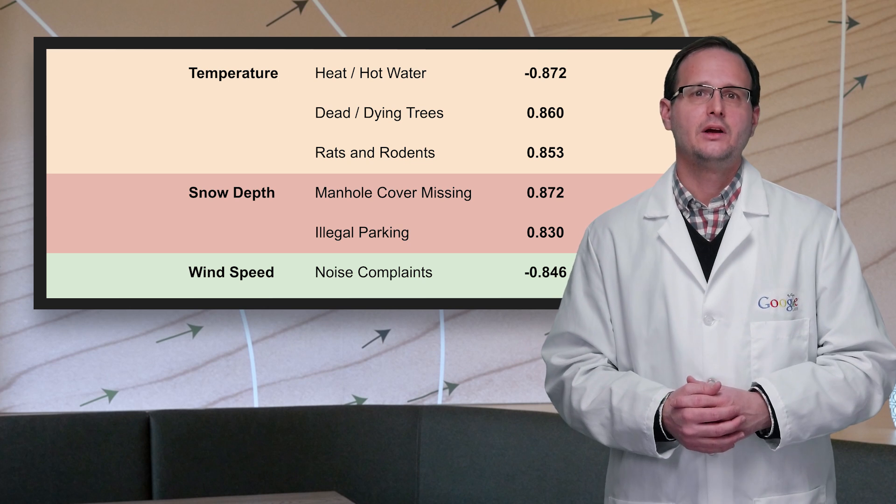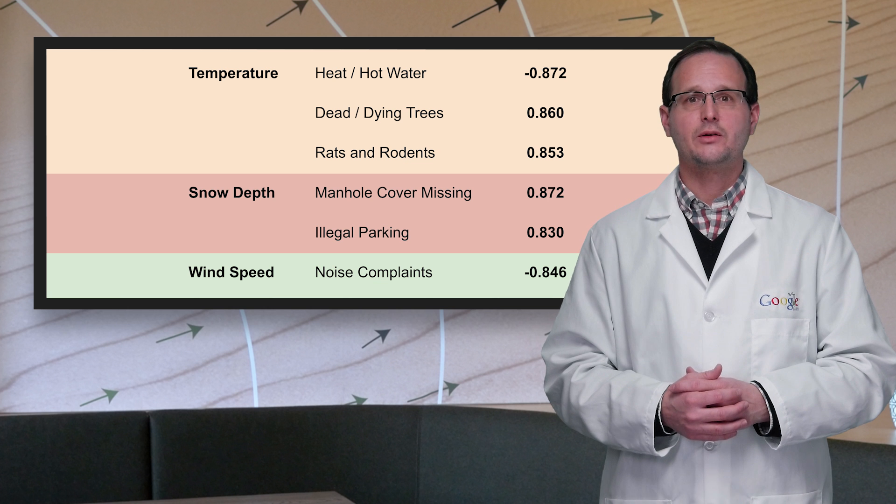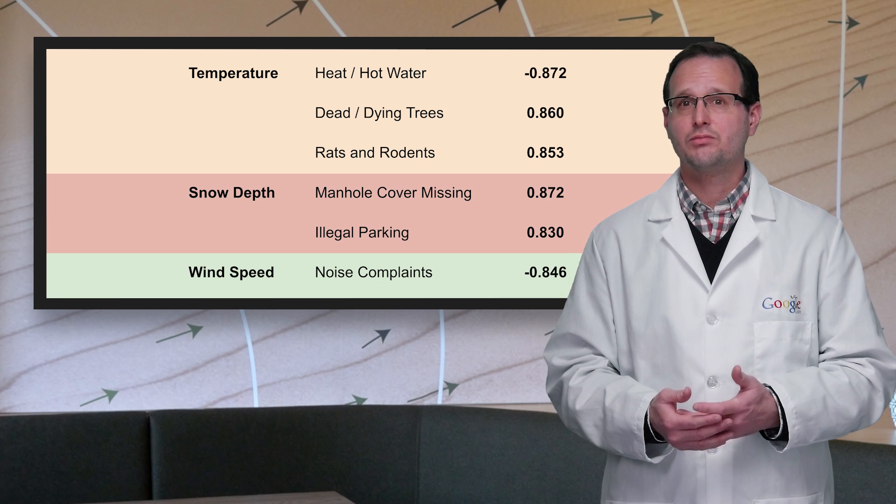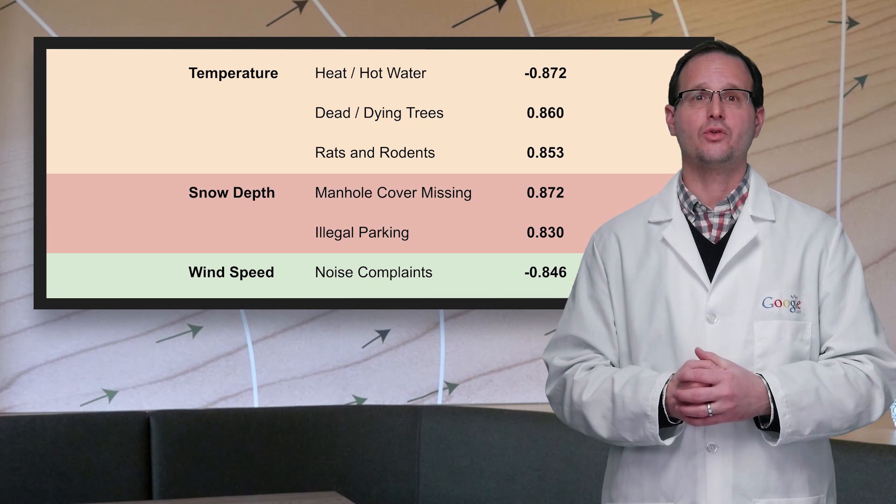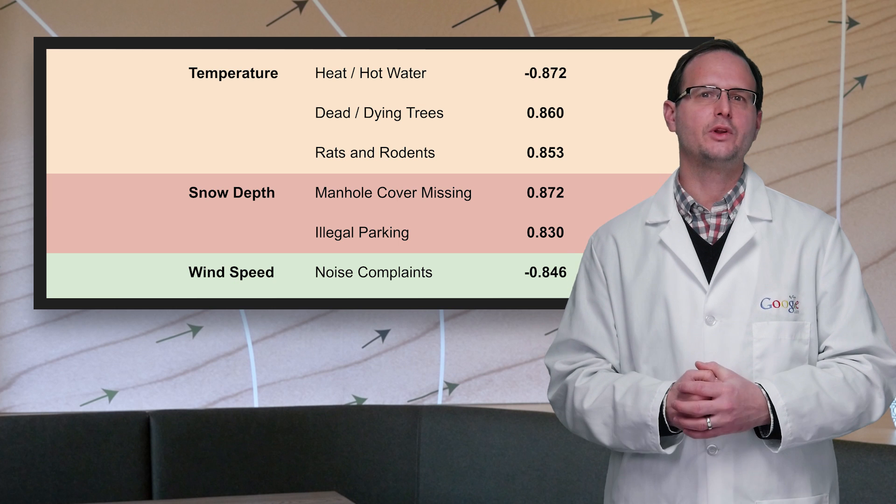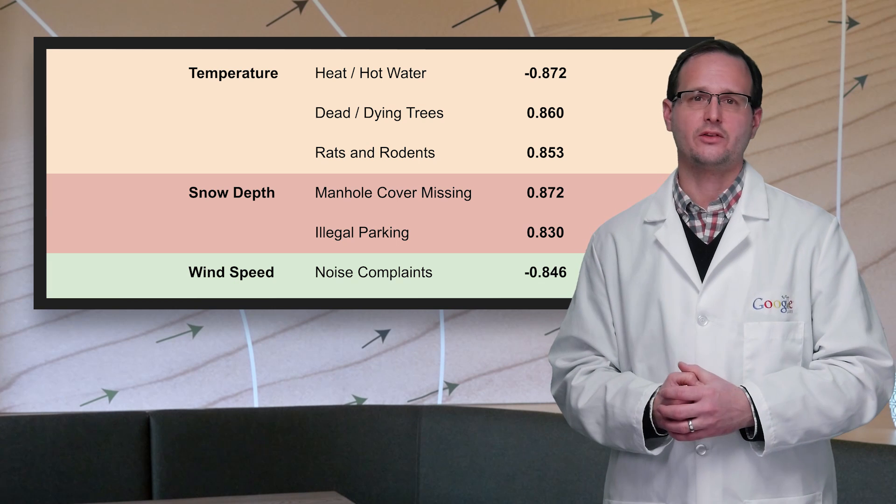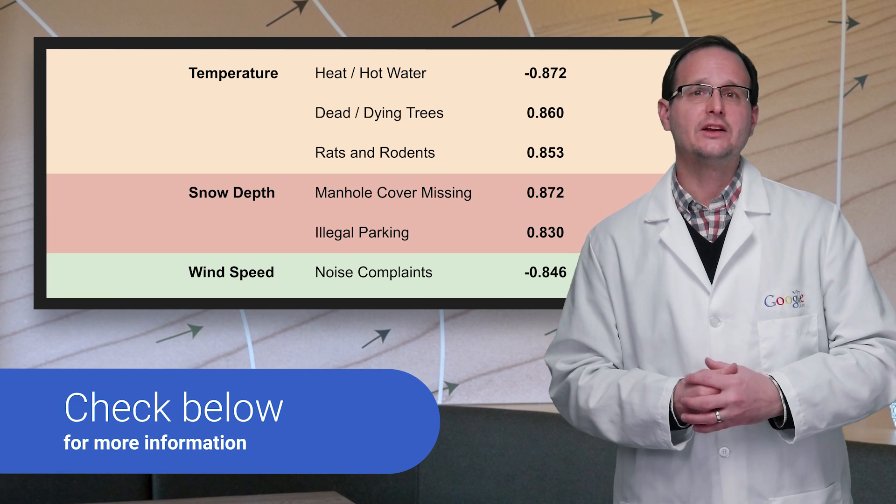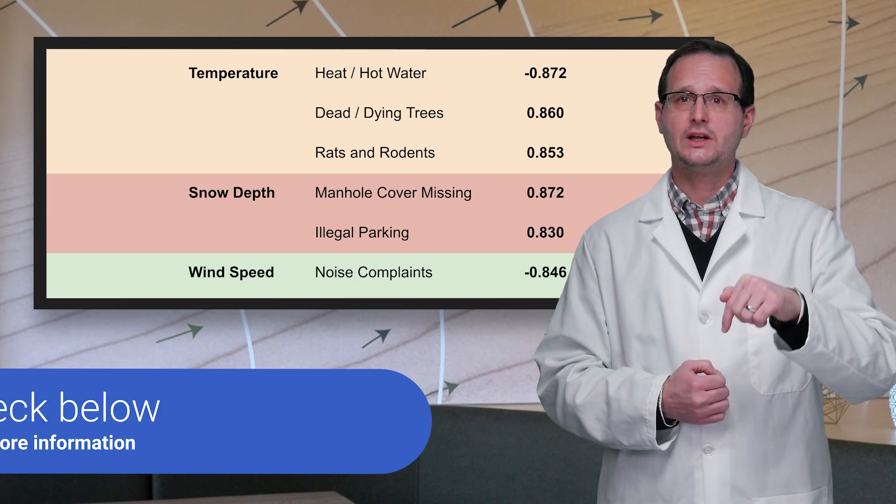The most likely candidates? Temperature relationships with heating complaints, dead trees, and rat sightings, snow depth relationships with missing manhole covers and illegal parking, and higher wind speeds with lower noise complaints. You can find a link to the full table and the queries here.